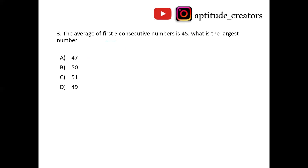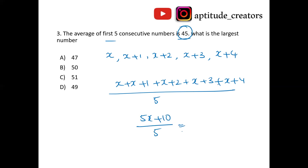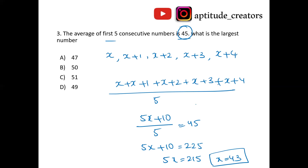The average of first five consecutive numbers is 45. Find the largest number. Traditional method: let the numbers be X, X+1, X+2, X+3, X+4. Sum divided by 5 equals 45, so 5X plus 10 divided by 5 equals 45. Therefore 5X plus 10 equals 225, 5X equals 215, X equals 43. Largest number is 43 plus 4 equals 47. Answer is 47.